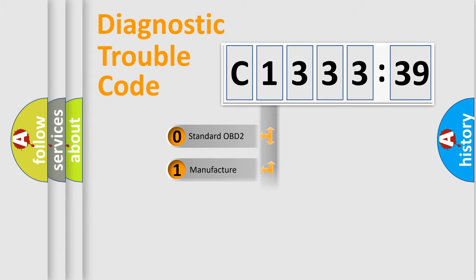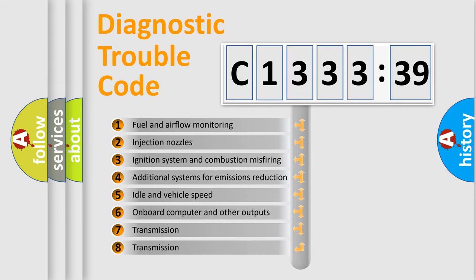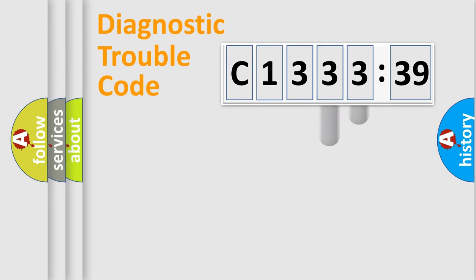If the second character is expressed as zero, it is a standardized error. In the case of numbers 1, 2, or 3, it is a manufacturer-specific error. The third character specifies a subset of errors.